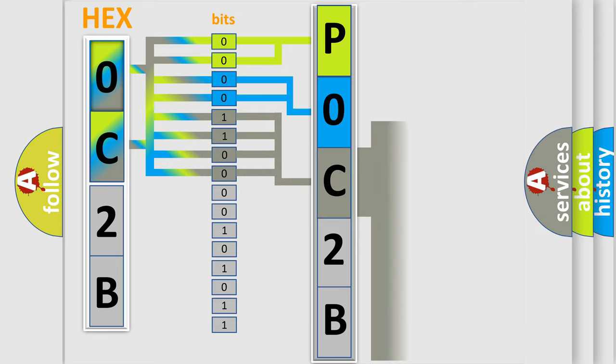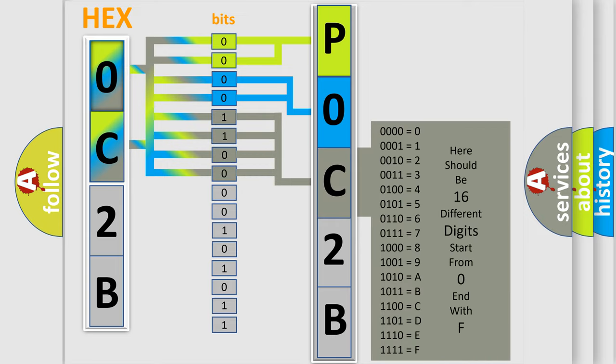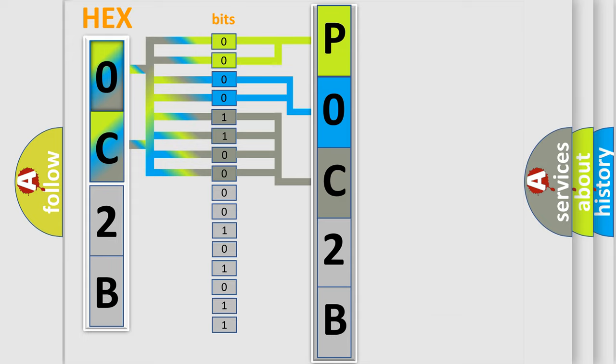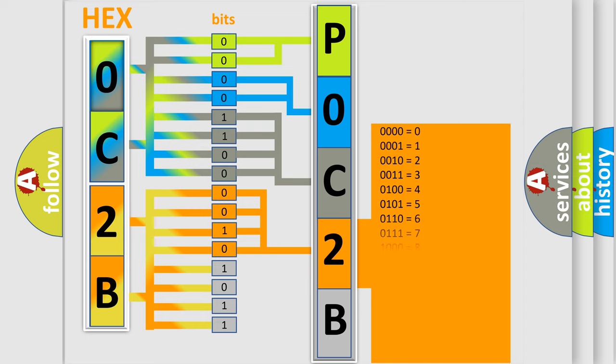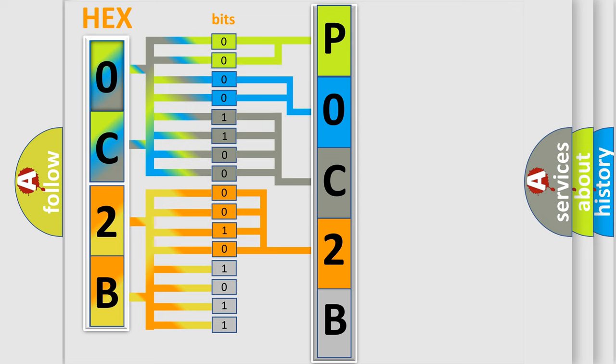The second byte is composed of a combination of eight bits. The first four bits determine the fourth character of the code, and the combination of the last four bits defines the fifth character. A single byte conceals 256 possible combinations.